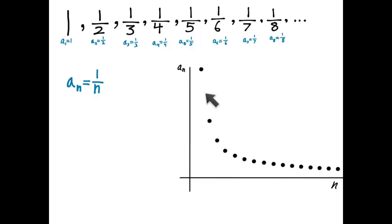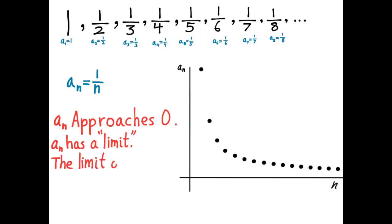And we can see a kind of a trend. And we call this trend approaching 0. We would say a sub n, the sequence, approaches 0. Or we would say a sub n has a limit, or the limit of a sub n is 0.